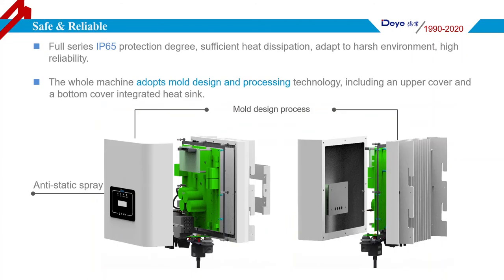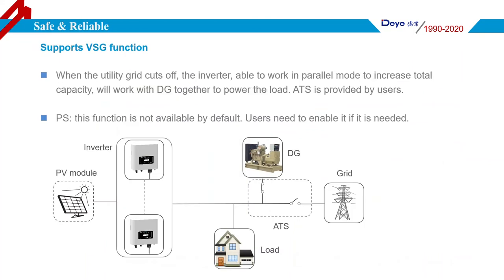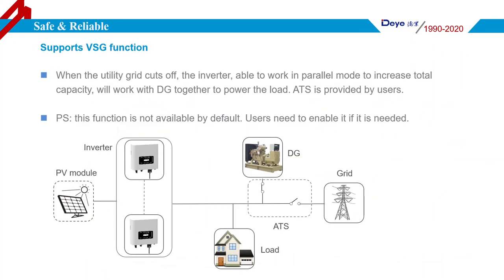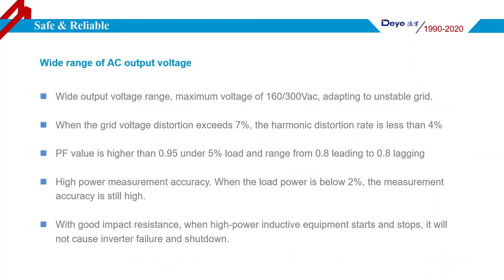The whole series of string inverters has IP65 protection, and the whole machine adopts a corrosion-resistant design, ensuring the inverter can adapt to harsh environments. A core feature is the VSD function: in poor-grid or off-grid areas, string inverters can work with a diesel generator without an additional EMS device. Other features include a wide output voltage range of 116 to 300V, and when grid voltage distortion exceeds 7%, the harmonic distortion rate can still be kept below 4%.